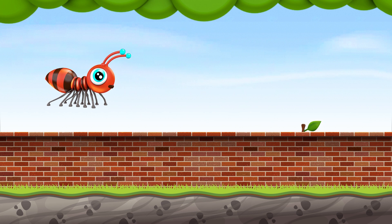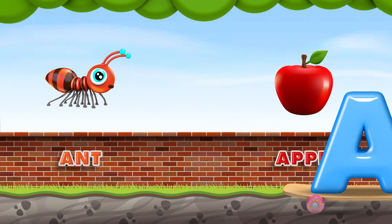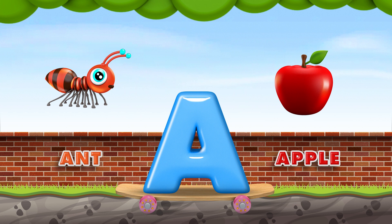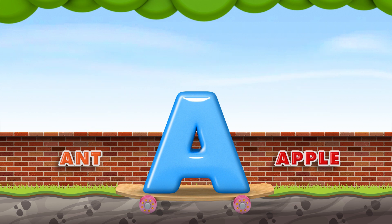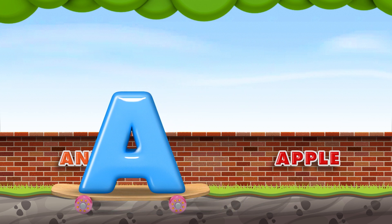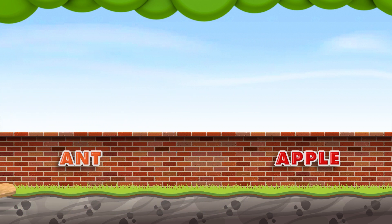Let's see who is with ant. It's an apple. Ant and the apple start with the letter A. The ant is going back to his home, and the apple is following him. Goodbye letter A.